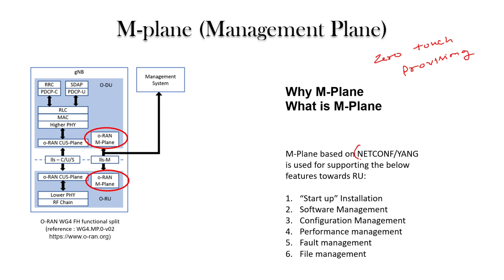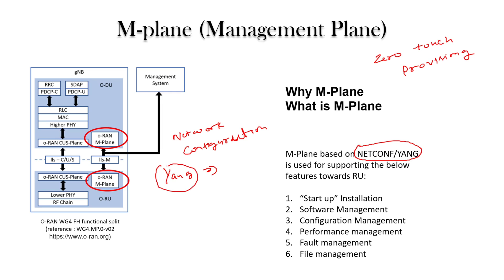We will discuss NETCONF and YANG in detail in a separate video, but here is a brief overview. NETCONF stands for Network Configuration — as the name suggests, it is used to configure elements in our network. Through the management plane, we can configure the RRH, which resides at a remote site. YANG stands for Yet Another Next Generation and is a data model.